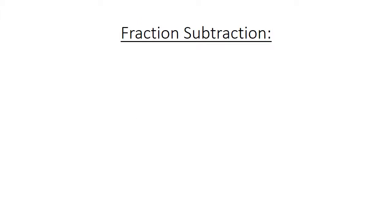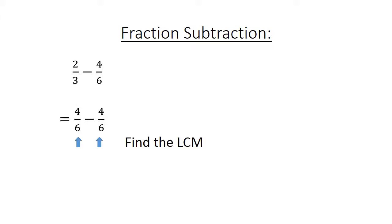Fraction subtraction. 2 over 3 minus 4 over 6. Find the lowest common multiple: 6. 4 over 6 minus 4 over 6 equals 0.